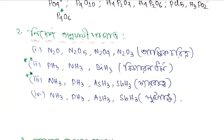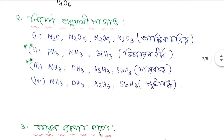NH3, PH3, Arsenic hydride, Antimony hydride — these are very important. Nitrogen hydride, Phosphorus hydride, Arsenic hydride, Antimony hydride — these are all key comparisons.